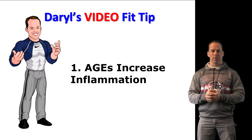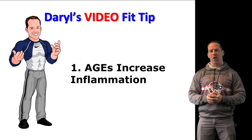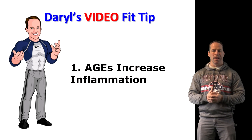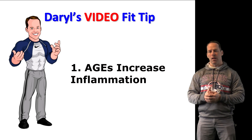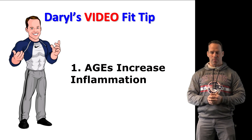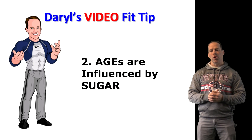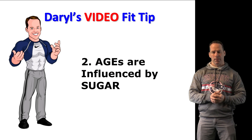One: AGEs increase inflammation. A study published in the Journal of Clinical Investigation found that the consumption of foods rich in advanced glycation end products equated to higher blood levels of AGEs and a higher level of C-reactive protein and other inflammatory markers. Two: AGE damage is proportional to sugar intake. Research shows that the most age-related damage in the body is directly proportional to sugar intake, so if you reduce the sugar, you reduce the AGEs.